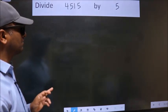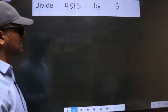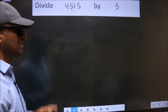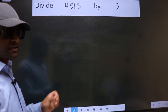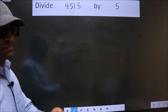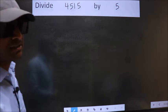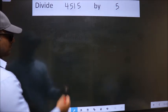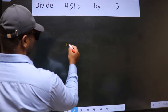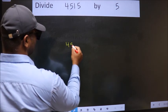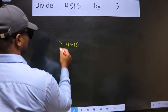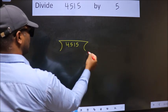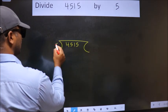Divide 4515 by 5. To do this division, we should frame it in this way: 4515 here, 5 here.